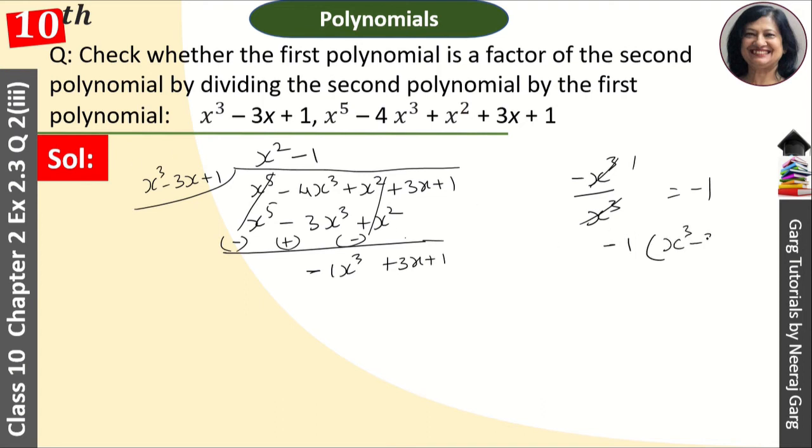x cube minus 3x plus 1 when we multiply we will change signs. So we have to do it minus x cube plus 3x and minus 1.